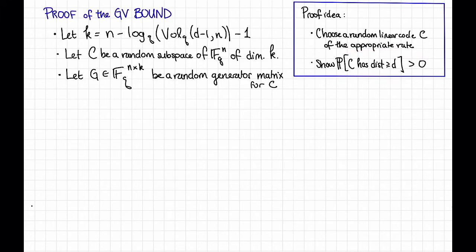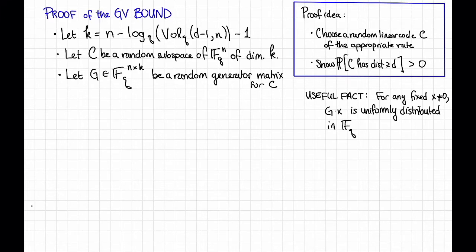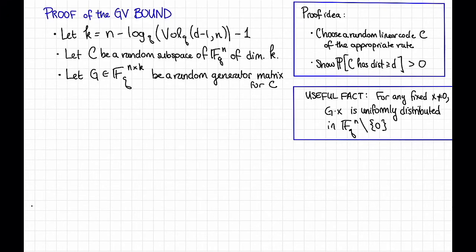To do this, let's record a useful fact: for any fixed non-zero x, the vector G times x for this random matrix G is uniformly distributed in Fq to the n, excluding zero. That is, if we fix any non-zero x and multiply it by our random matrix, the resulting random vector is equally likely to be any non-zero element of Fq to the n. An informal proof is that there's so much symmetry — how could it be anything other than uniformly distributed? It's a good exercise to prove this formally.